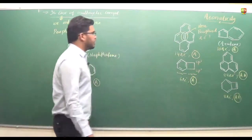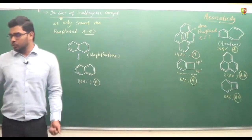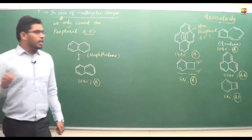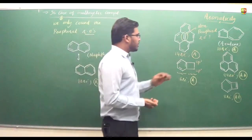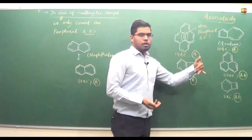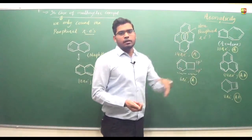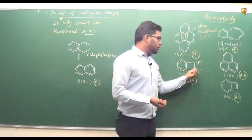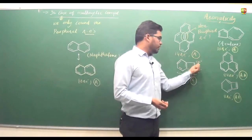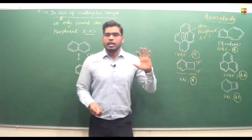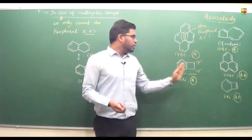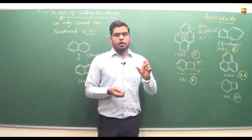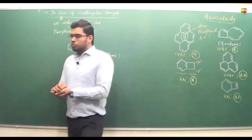We will see some more examples. Just keep in mind: we keep checking smaller and smaller rings until we get an aromatic ring. We only do this when the larger ring is non-aromatic. We keep checking smaller rings one by one.